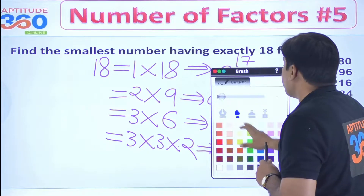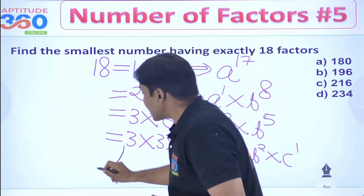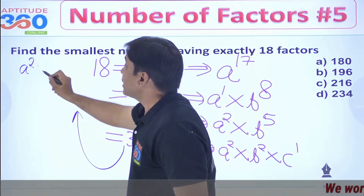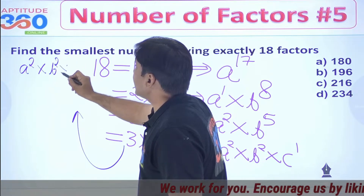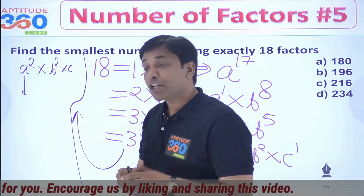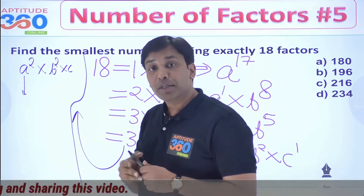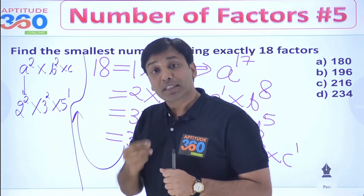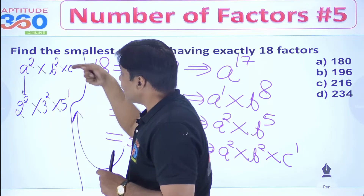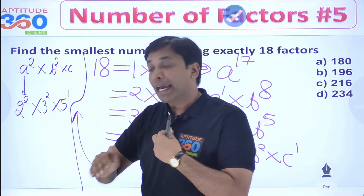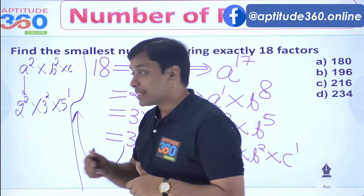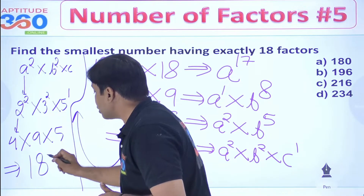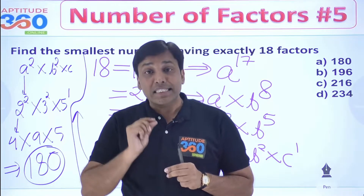We need to minimize this number. We should take the last possibility — A squared into B squared into C — and assign the smallest prime numbers to the highest powers. So we take 2 to the power 2, 3 to the power 2, and 5 to the power 1. That gives us 4 into 9 into 5. If you multiply them together you get 180. So 180 is the smallest number that has exactly 18 factors.